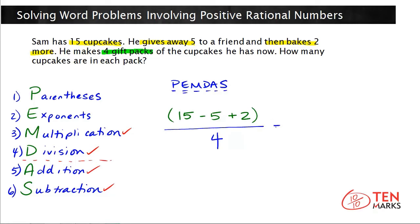Now simplify. On top you have fifteen minus five, which is ten, plus two. We're doing this first because parentheses comes first — that's what we're looking at. So you have ten plus two now over four. I still have parentheses, so I'm going to deal with that further. Ten plus two equals twelve.